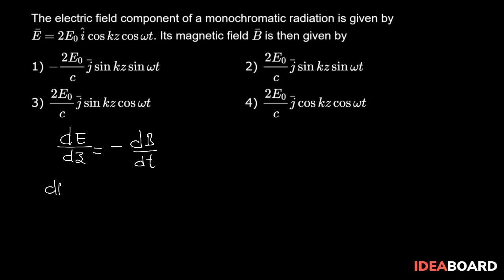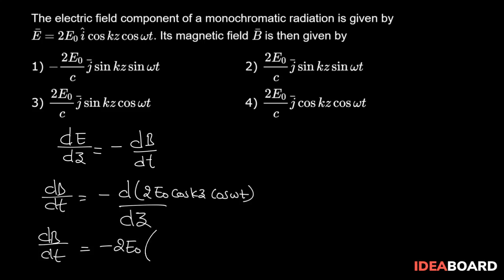So I can write dB/dt = -d/dz of the electric field, which is given as 2E₀ cos kz cos ωt. So dB/dt = -2E₀ times differentiation of cos kz will become -sin kz times k times cos ωt.